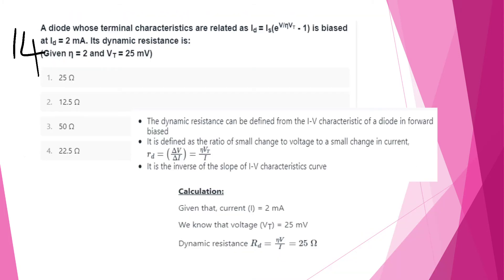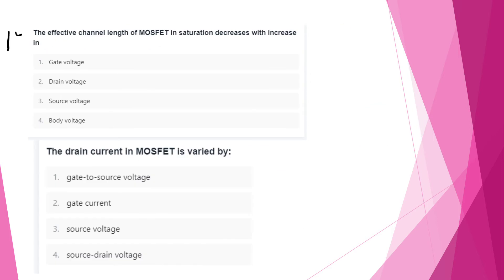Numerical problem: A diode has thermal characteristics described by id = Is × (e raised to V/eta×Vt − 1), biased at id = 2 mA. Dynamic resistance is calculated using rd = Vt / I. By direct substitution, the answer is 25 ohms.